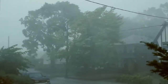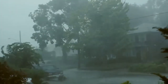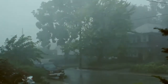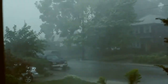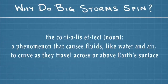Why do storms spin in different directions depending on their location? And why do they spin in the first place? A storm's rotation is due to something called the Coriolis effect, which is a phenomenon that causes fluids like water and air to curve as they travel across or above Earth's surface.